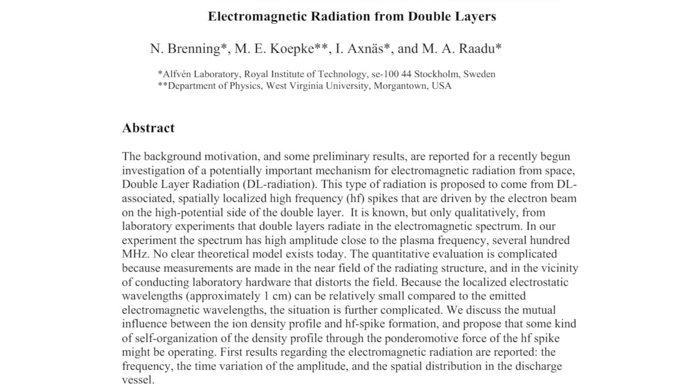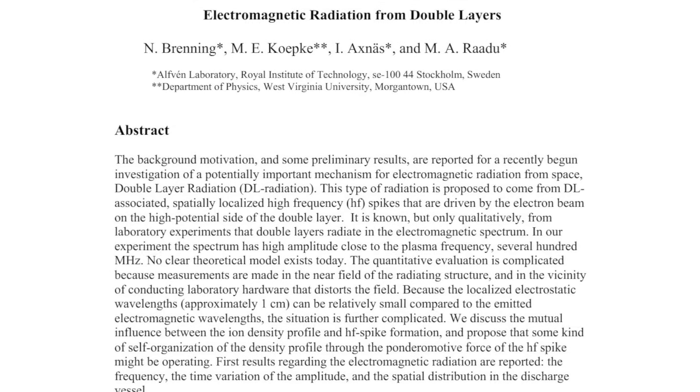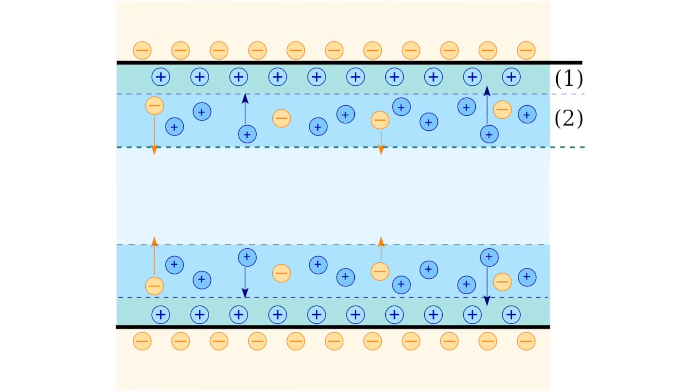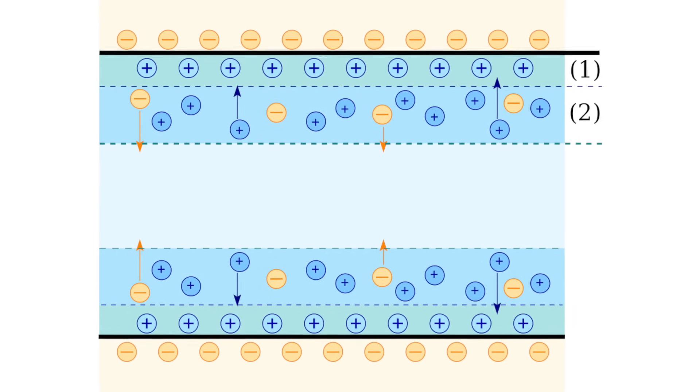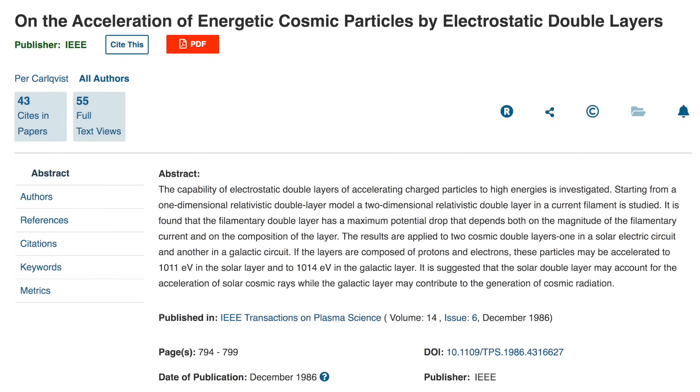Double layers are noisy. They emit radio waves over a broad band of frequencies. They can sort matter into regions of light composition and condense and rarefy it. They can also accelerate charged particles to cosmic ray energies.